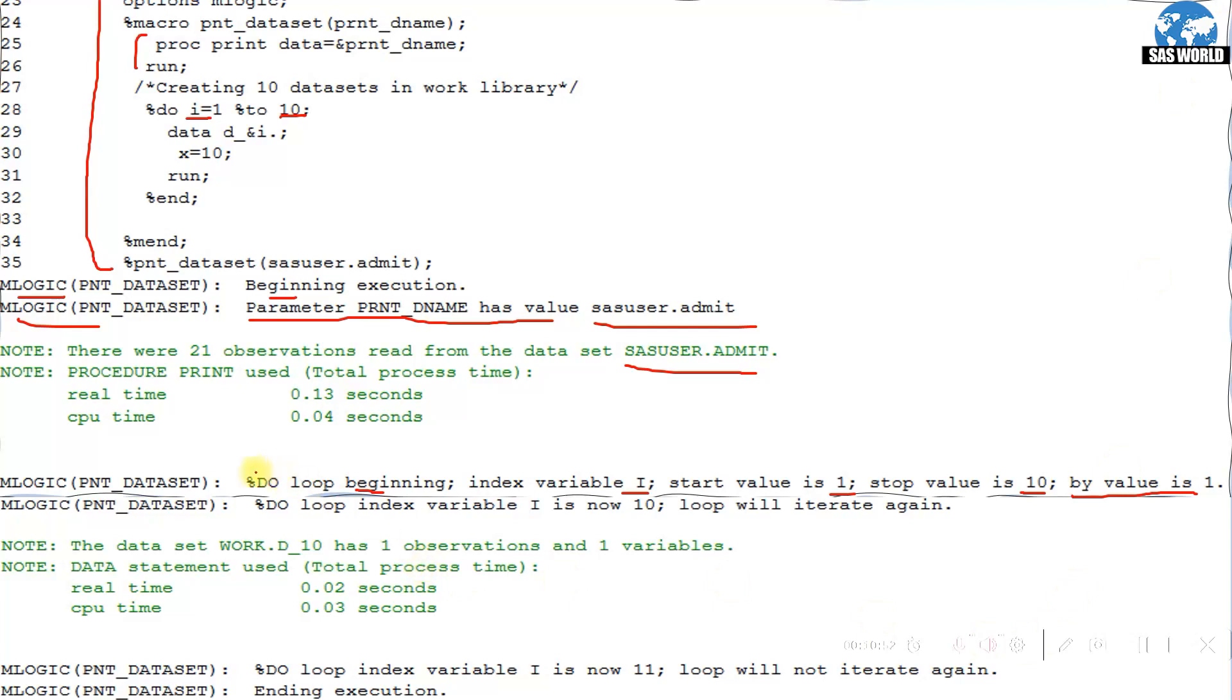These types of similar statements are there for 10 times. When the loop is executing the 10th time, the value of i is 10, loop will iterate again message is given. It will create a dataset work.d_10 that has one observation. Ten datasets have been created, but why is it saying loop will iterate again? Because the value is 10 in our condition. Next time when it goes and iterates, it will check. Do loop index variable i is now 11 and loop will not iterate again. It is saying this loop will not iterate again and ending execution.